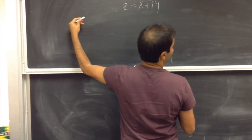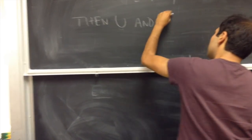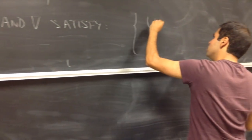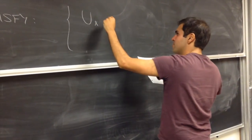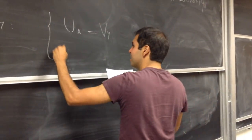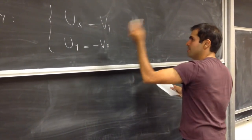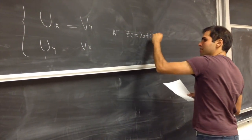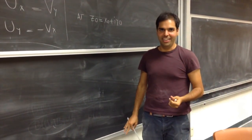It turns out that both the real part and the imaginary part have to satisfy some very particular equations called the Cauchy-Riemann equations, which is a very important way to check if a function is not differentiable. Namely, u and v satisfy the following equations: u_x — that is, the real part differentiated with respect to x — equals the imaginary part differentiated with respect to y; and u_y equals minus v_x, at the point z-naught, which is x-naught plus iy-naught.